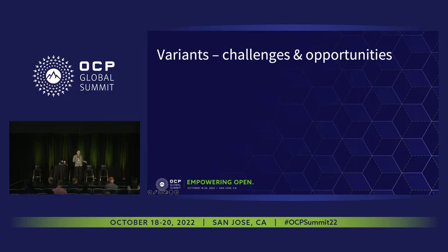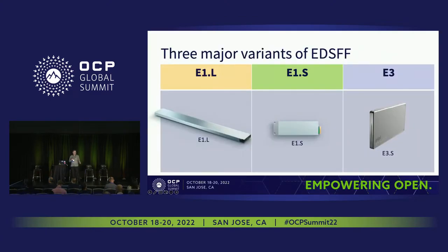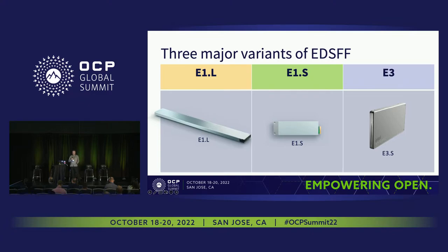EDSFF has these three advantages over U.2, and a lot of people say they're sold and want EDSFF. But there's a problem: EDSFF is not one thing — it's actually several things. At a high level, there are three different major form factors of EDSFF. You've got the E1L, which evolved from the ruler form factor. You've got the E1S, or short, that evolved from M.2 and NF1 form factors. And then you've got the E3 version — so three major versions of EDSFF to choose from.